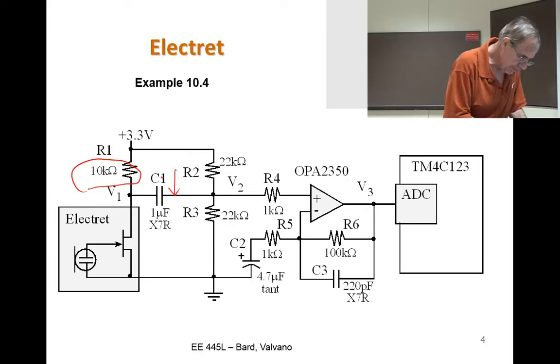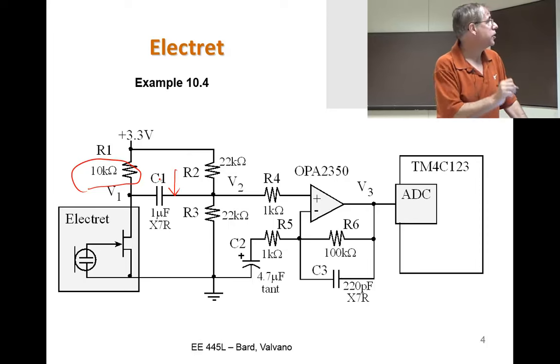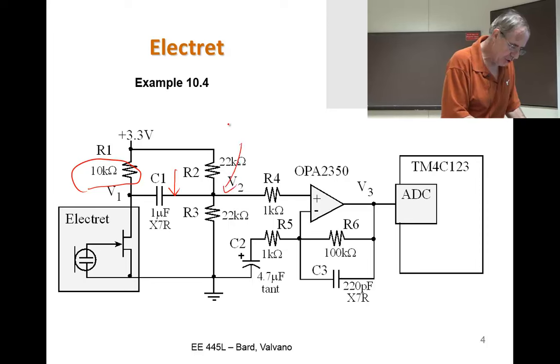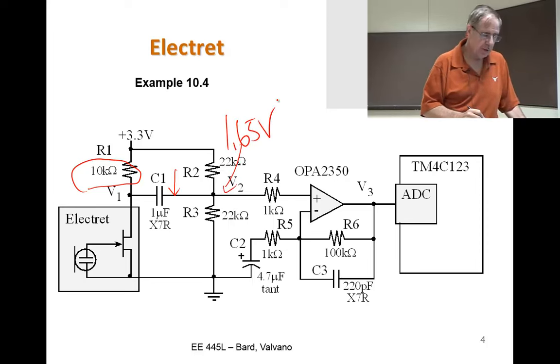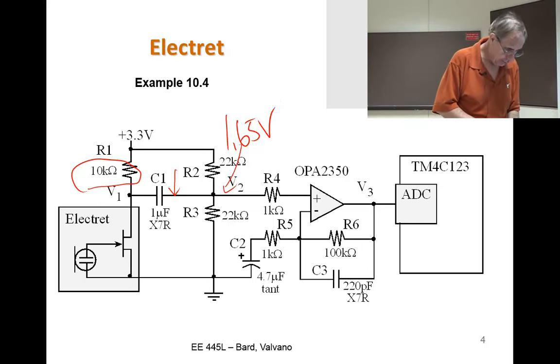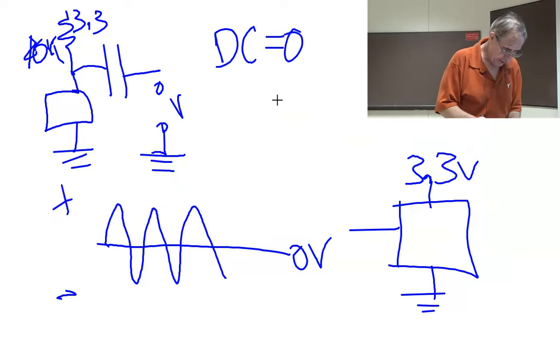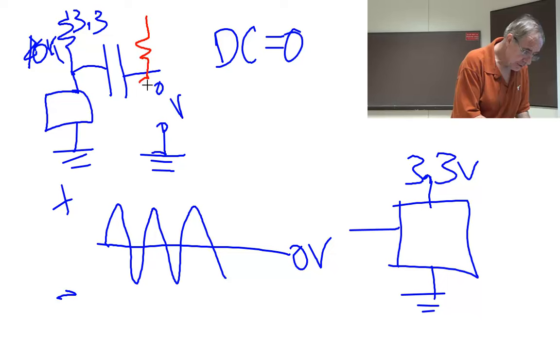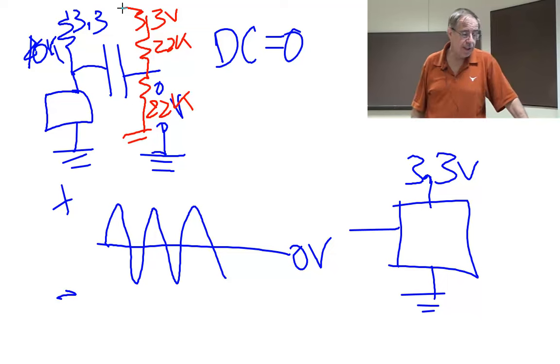Okay, so again, this was the place that we drew on the other picture. So what I'm going to do is force it to go to 1.65 volts by using a biasing technique. So if I look at this circuit, V2, right, this is not the same one I did before. If I go back over here and I add these two 20k, 22k resistors, okay, now what is the DC response of this?